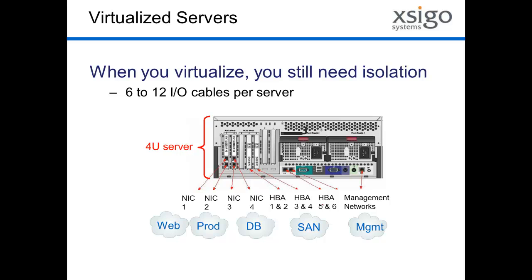With virtualization, we're bringing these things together into one server. So now a single server could be connected into the web tier, a production network, and some kind of storage. These connections all go into a single server, but they're done as physically separate connections, which is why we have anywhere from 6 to 20 cables going into a single physical server — because of all these isolated networks in the data center.